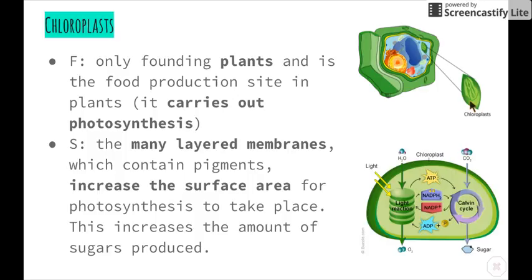Lastly, we have chloroplasts, which are only found in plant cells as they are the site of photosynthesis. As we know, the plant takes in water and carbon dioxide from the air and produces glucose and sugar. The structure features many layered membranes containing the pigment chlorophyll, which is essential for photosynthesis. The many layered membranes increase the surface area, providing lots of room for photosynthesis to take place — and if we have more space for reactions, then we have a greater amount of sugar produced.